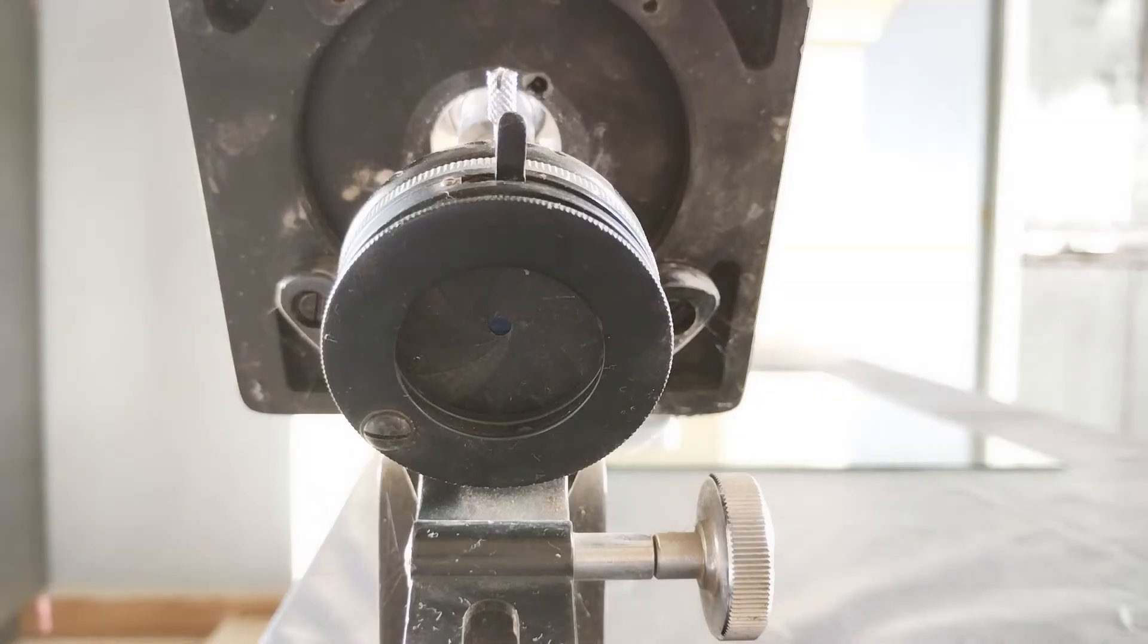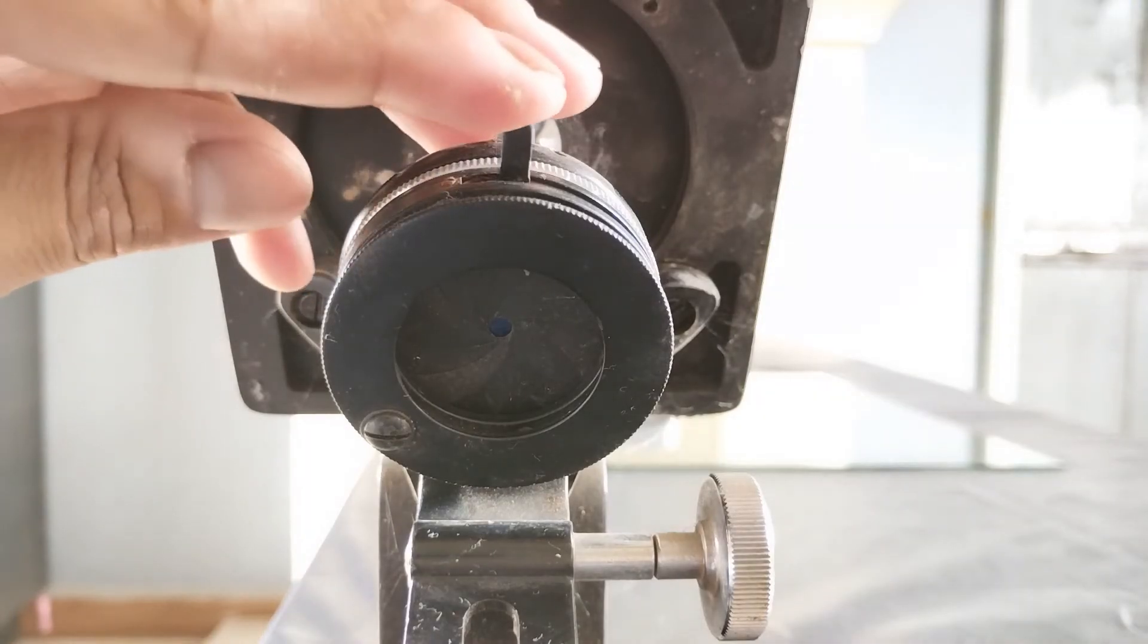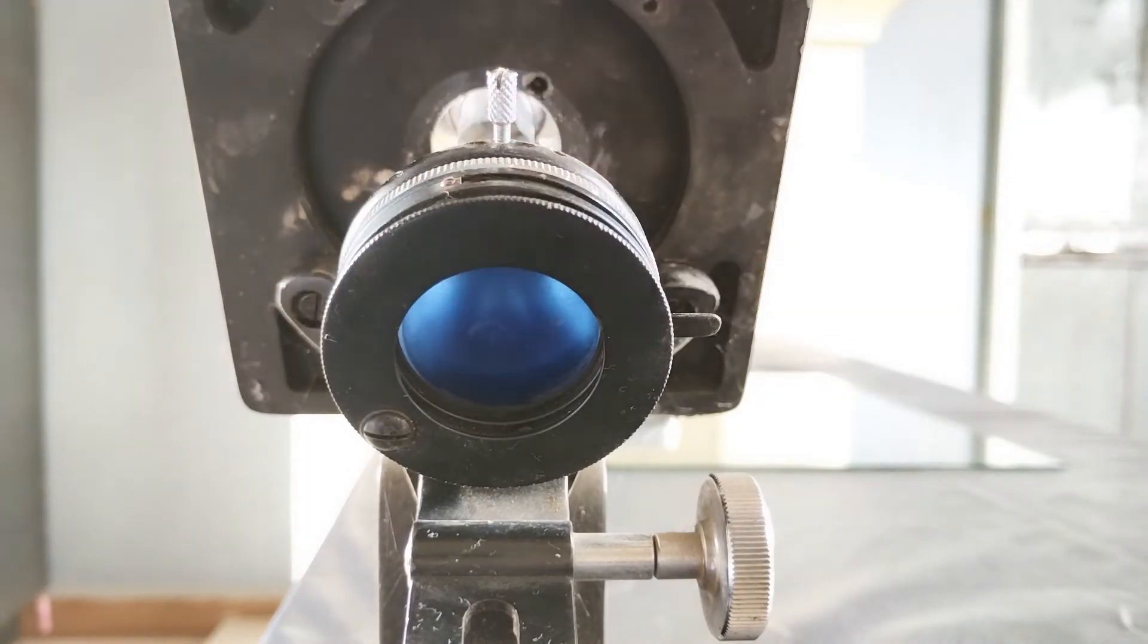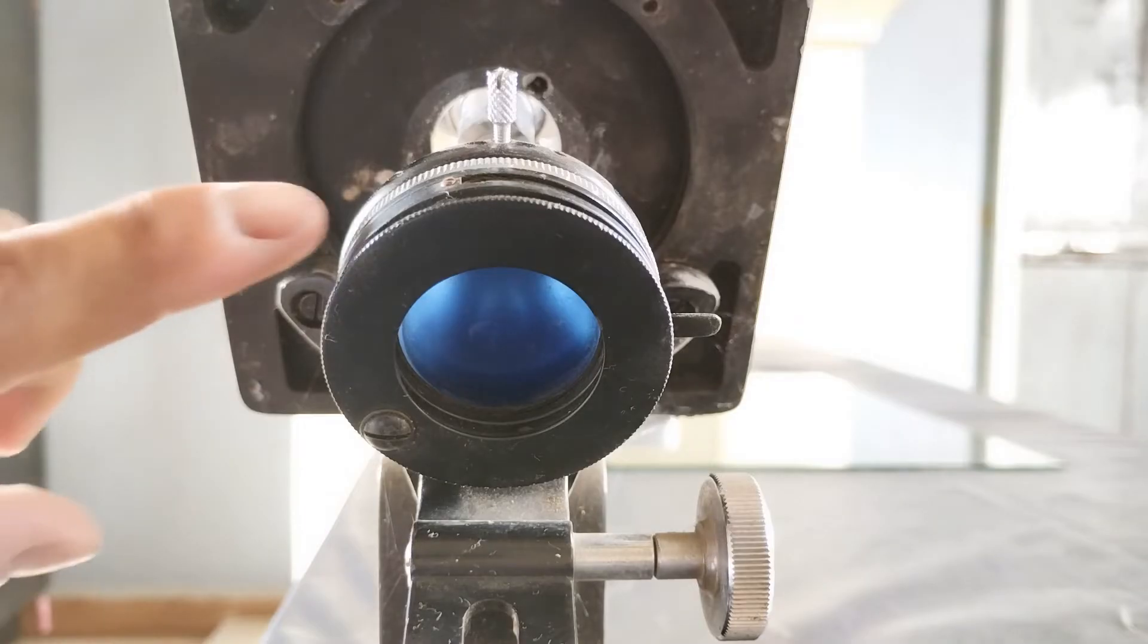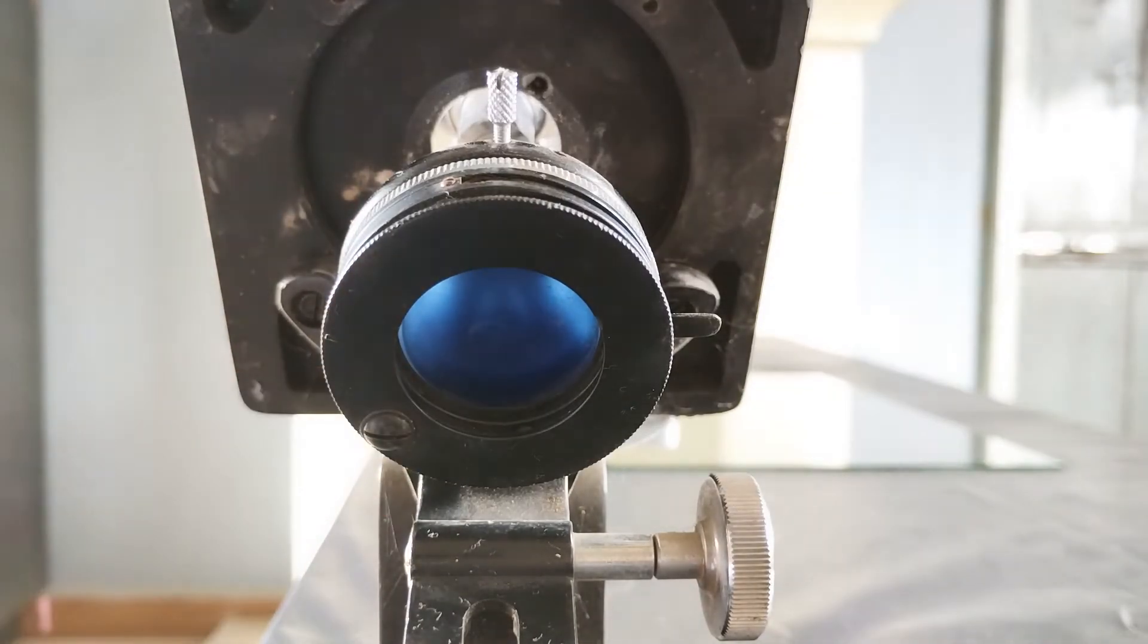Modern microscopes also come fitted with a blue filter underneath or above the iris diaphragm. The main advantage of a blue filter is that, irrespective of the color of the light source, the blue filter will render it colorless and give a clear white background in the field of view. This is both soothing to the eyes and also doesn't mask the true color of the specimen.